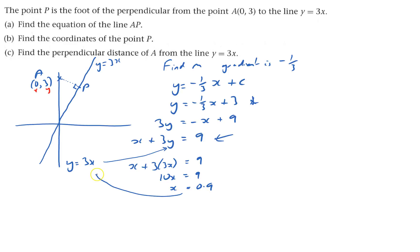And that can go into here. And y equals 3 lots of that, which is 2.7. So the point here is (0.9, 2.7). And that's the coordinates of the point P.